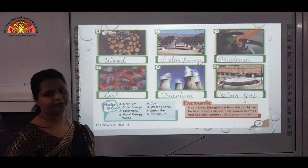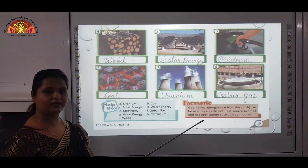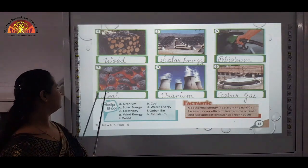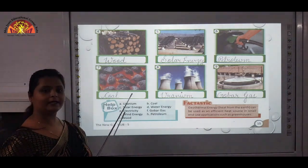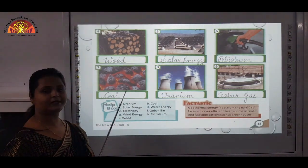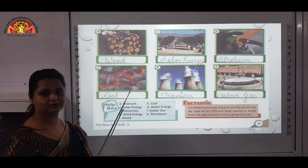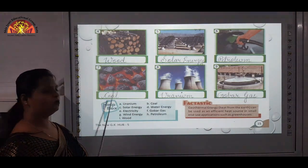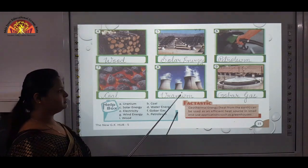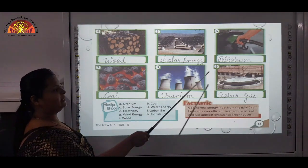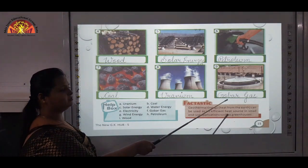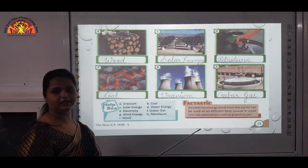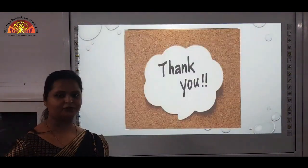Sixth one is petroleum — you all are aware of petroleum; it is used for running vehicles. Seventh one is coal — in earlier times coal was used for running trains; by technological advancement things have changed. Eighth one is uranium. And the ninth one is gobar gas — this is also used for producing electricity. Thank you.